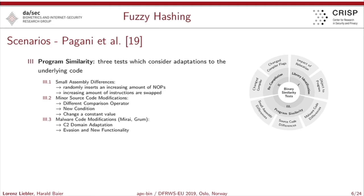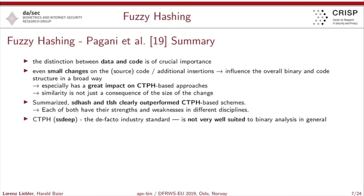Those are roughly the three scenarios Fabio introduced. To summarize his findings, the main finding is that the distinction between data and code is of crucial importance. Everyone familiar with binary analysis should agree with this statement — even small changes on the source code influence the overall binary and code structure in a very broad way.